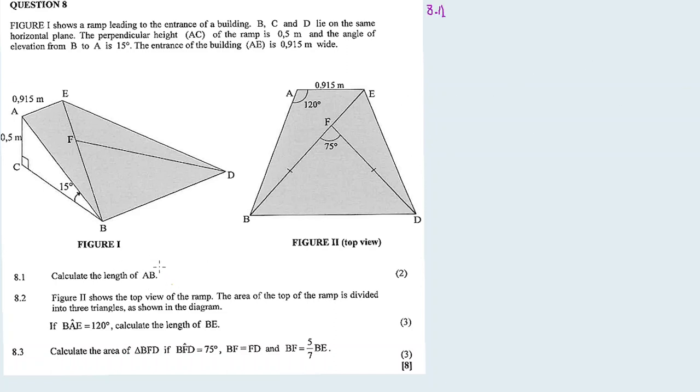Now 8.1, let's calculate the length AB. In order to calculate the length AB, we look at triangle ABC. This triangle ABC is a right angle triangle, which means we can apply trigonometric ratios. AB is the hypotenuse, so we can calculate it using one of the trigonometric ratios. I'm given AC and angle B.